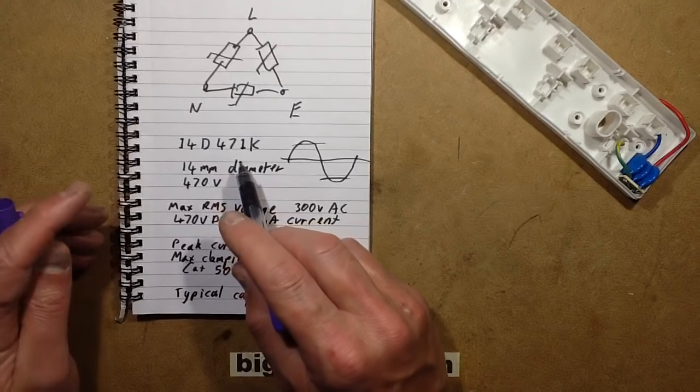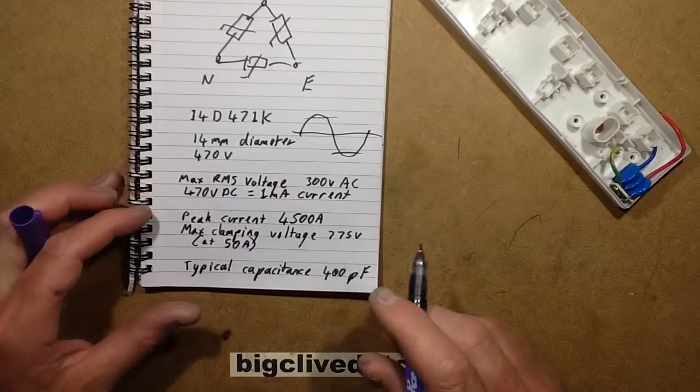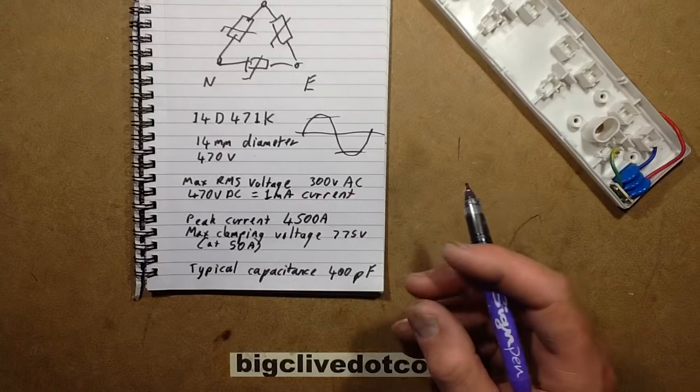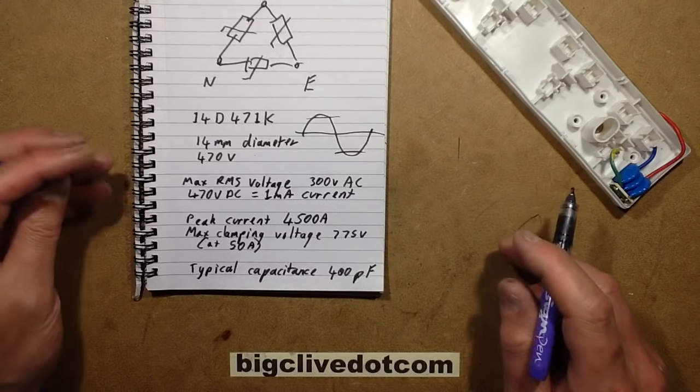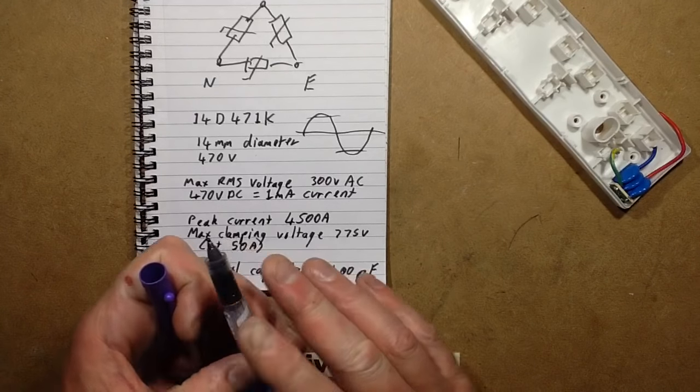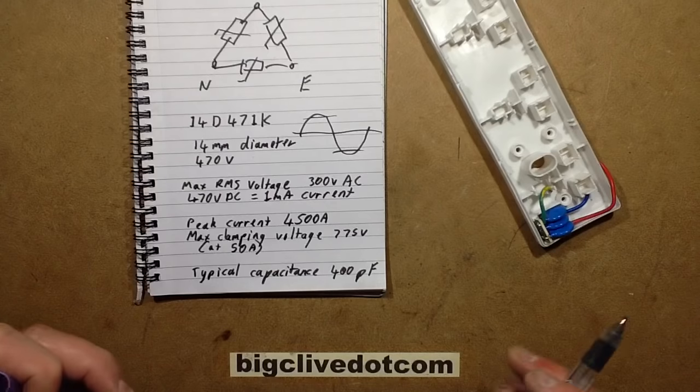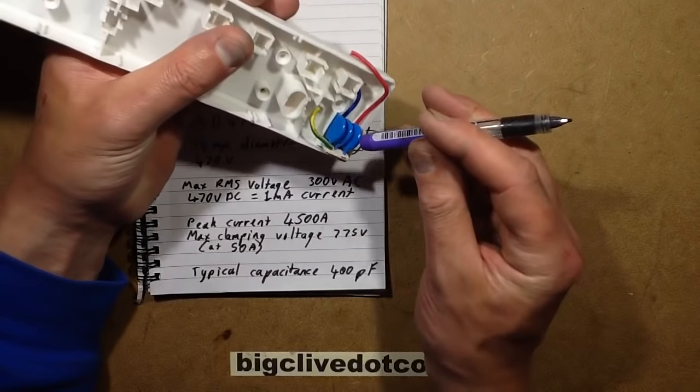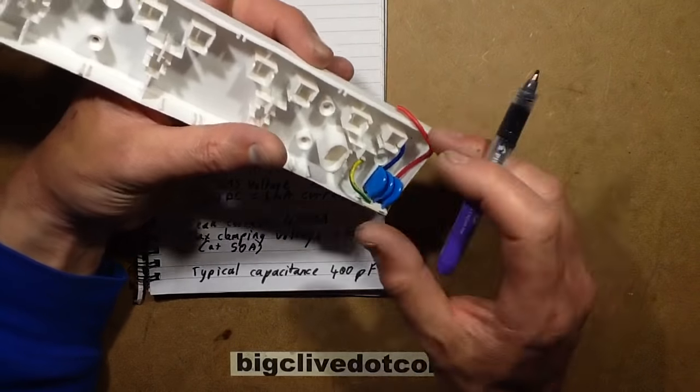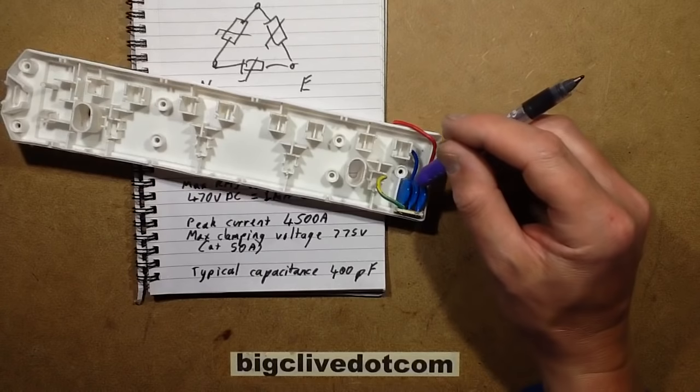And the 470V rating is the voltage at which it will be passing 1mA current during testing. The peak current for dissipation is 4500A, which is pretty good. That's for when it's dissipating a sort of high voltage transient, like when lightning strikes a line or something like that. And the max clamping voltage at 50A is 775V. And something I never really considered, they have capacitance of around about 400pF, which is in this case that's about half a nanofarad. So that probably helps with decoupling sharp transients.